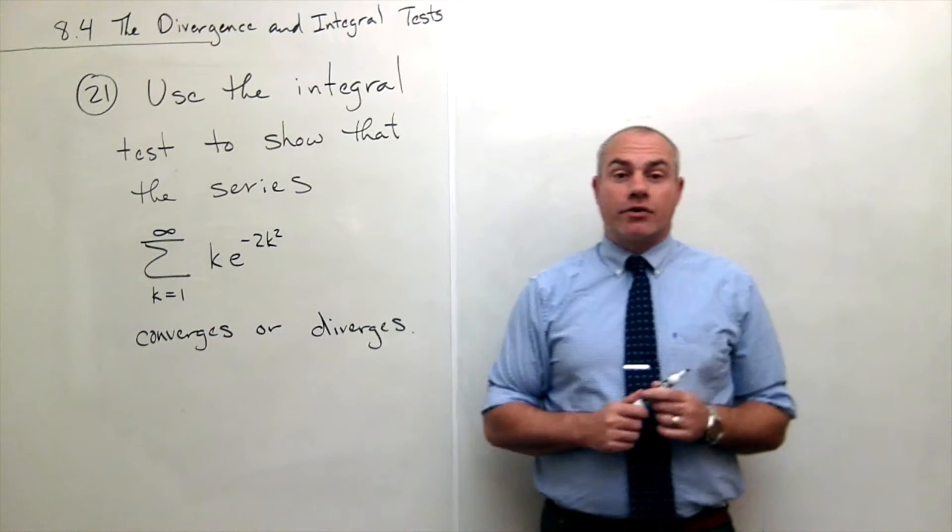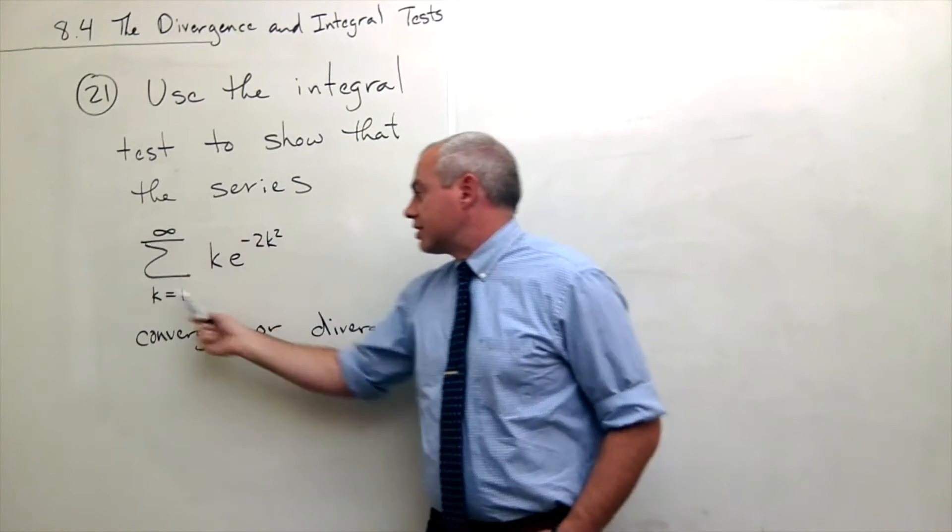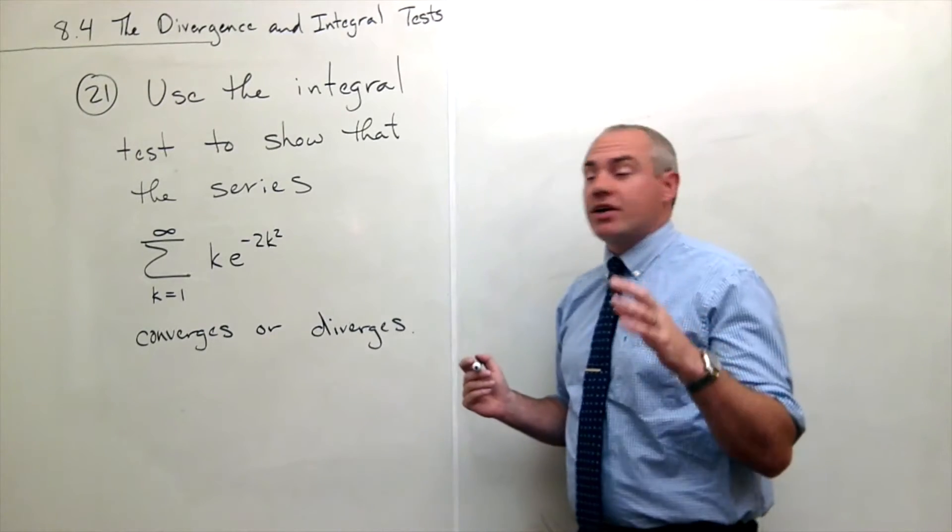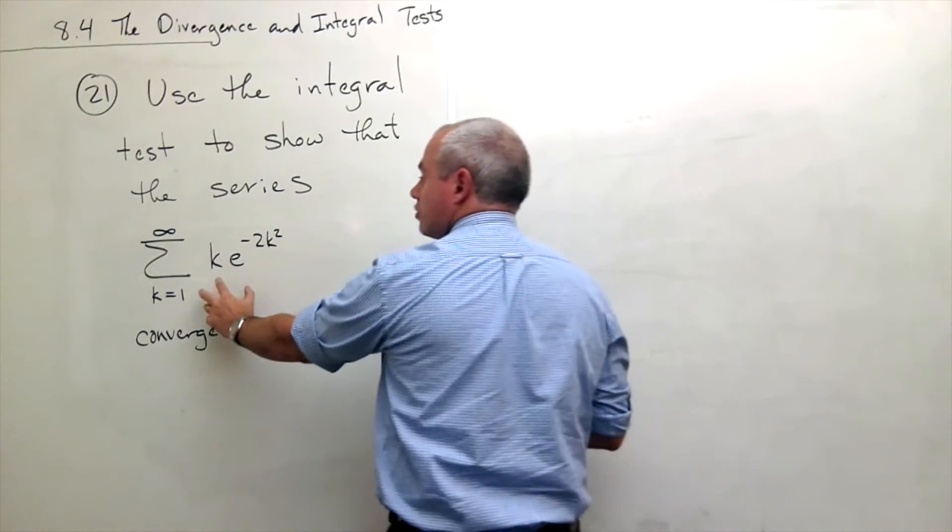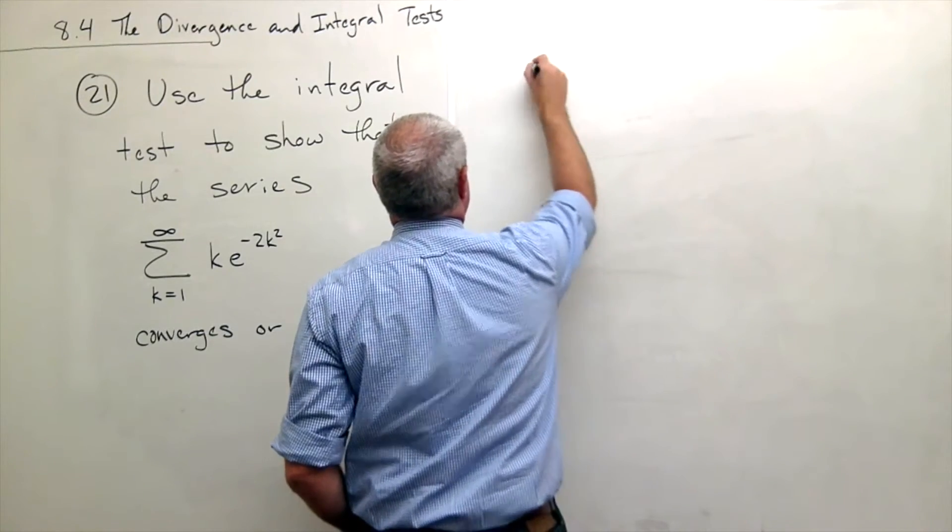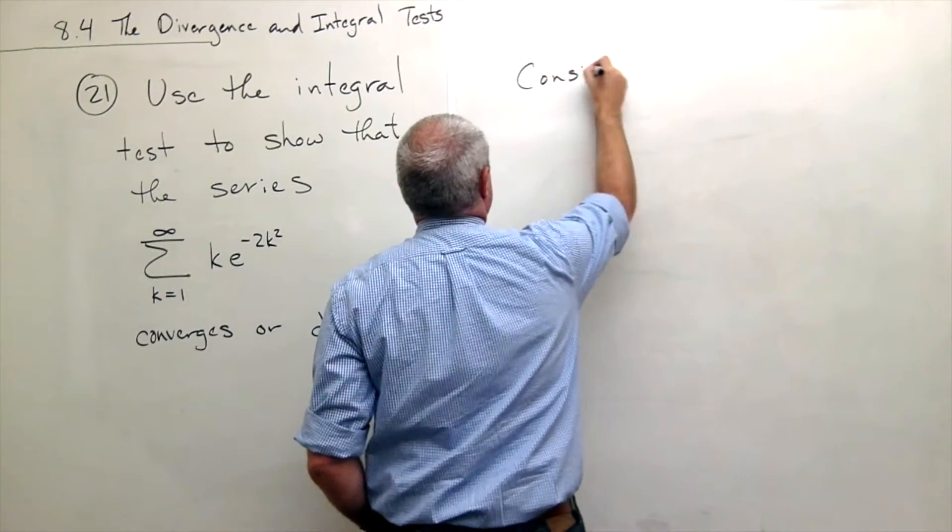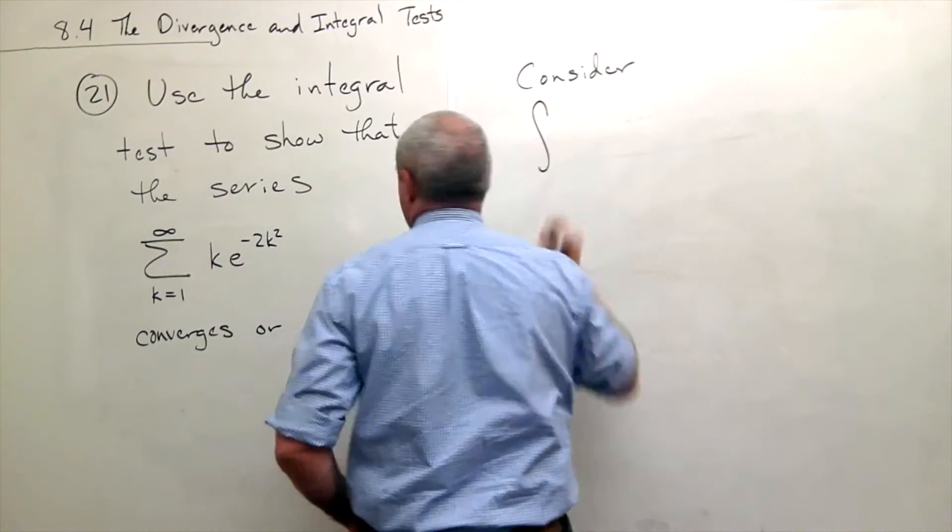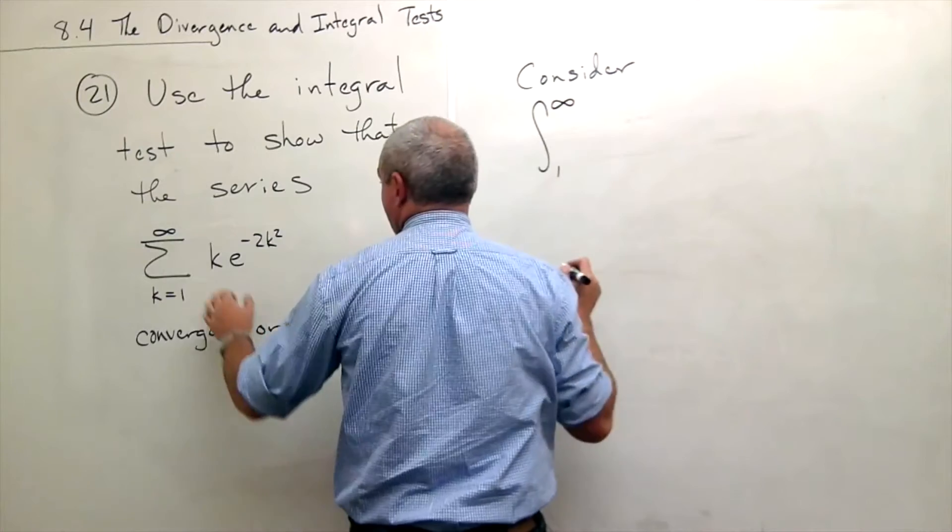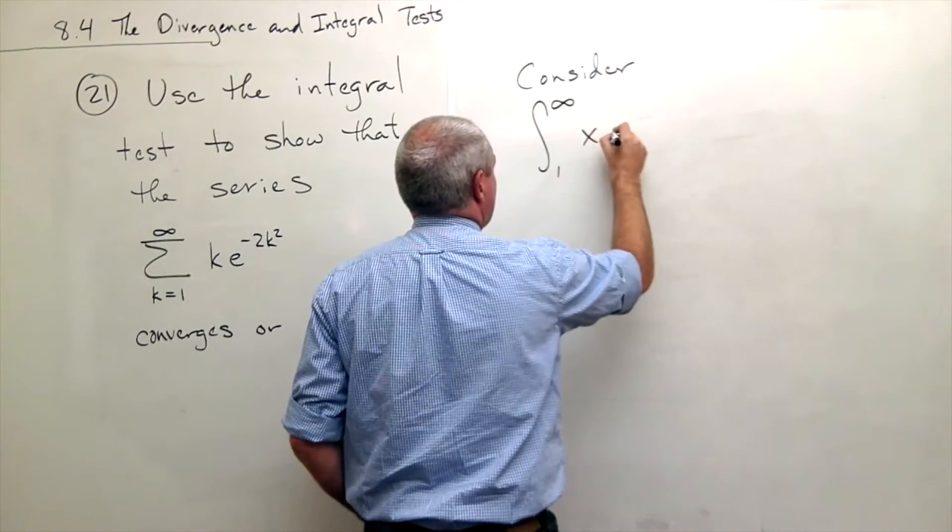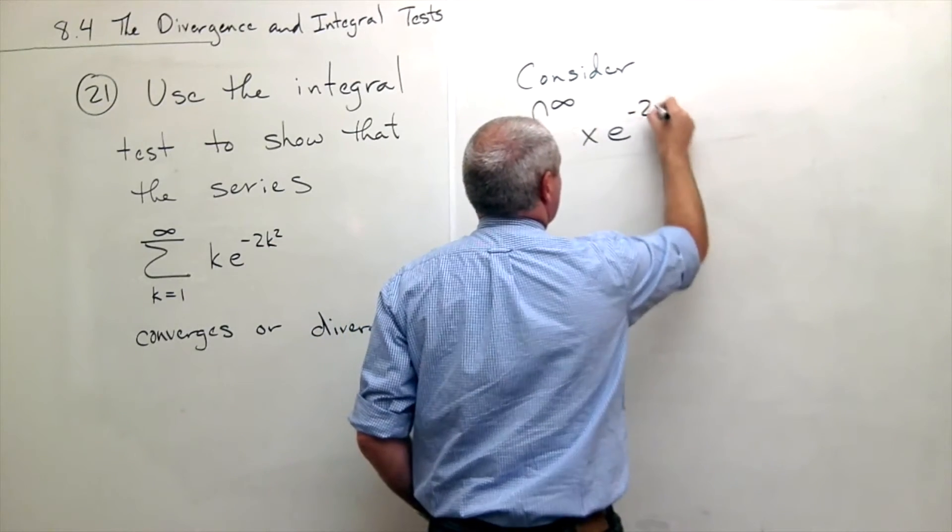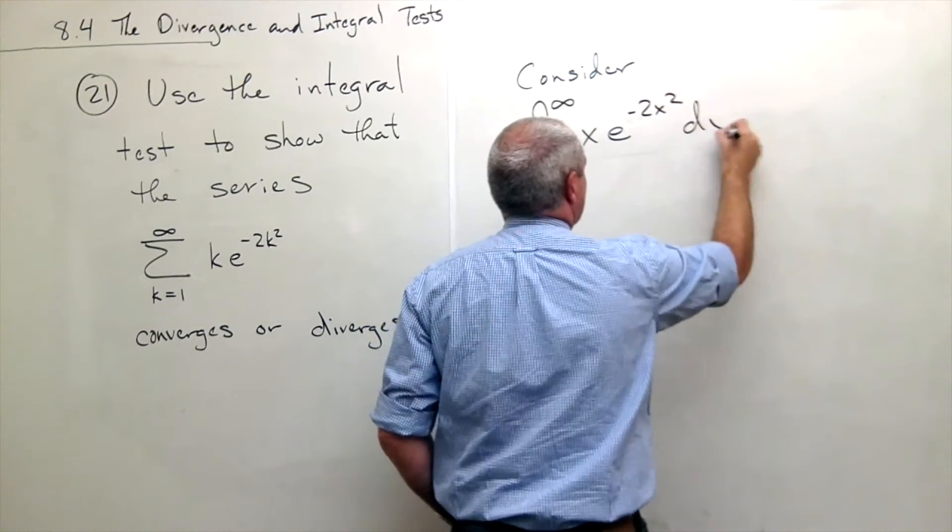So I want to use the integral test to show that this series either converges or diverges. The way that I go about that is I'm going to set up a very similar integral to what I have here as a series. So let's consider this integral: the integral from 1 to infinity of x e to the negative 2x squared dx.